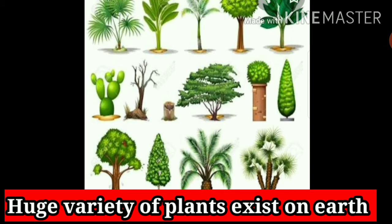There is a huge variety of plants on earth. If you look at your surroundings you will find different types of plants like banyan tree, banana tree, mango tree, and so on. All of them differ in shape and size. Plants grow almost everywhere — on plains, mountains, deserts, polar regions, and in water.